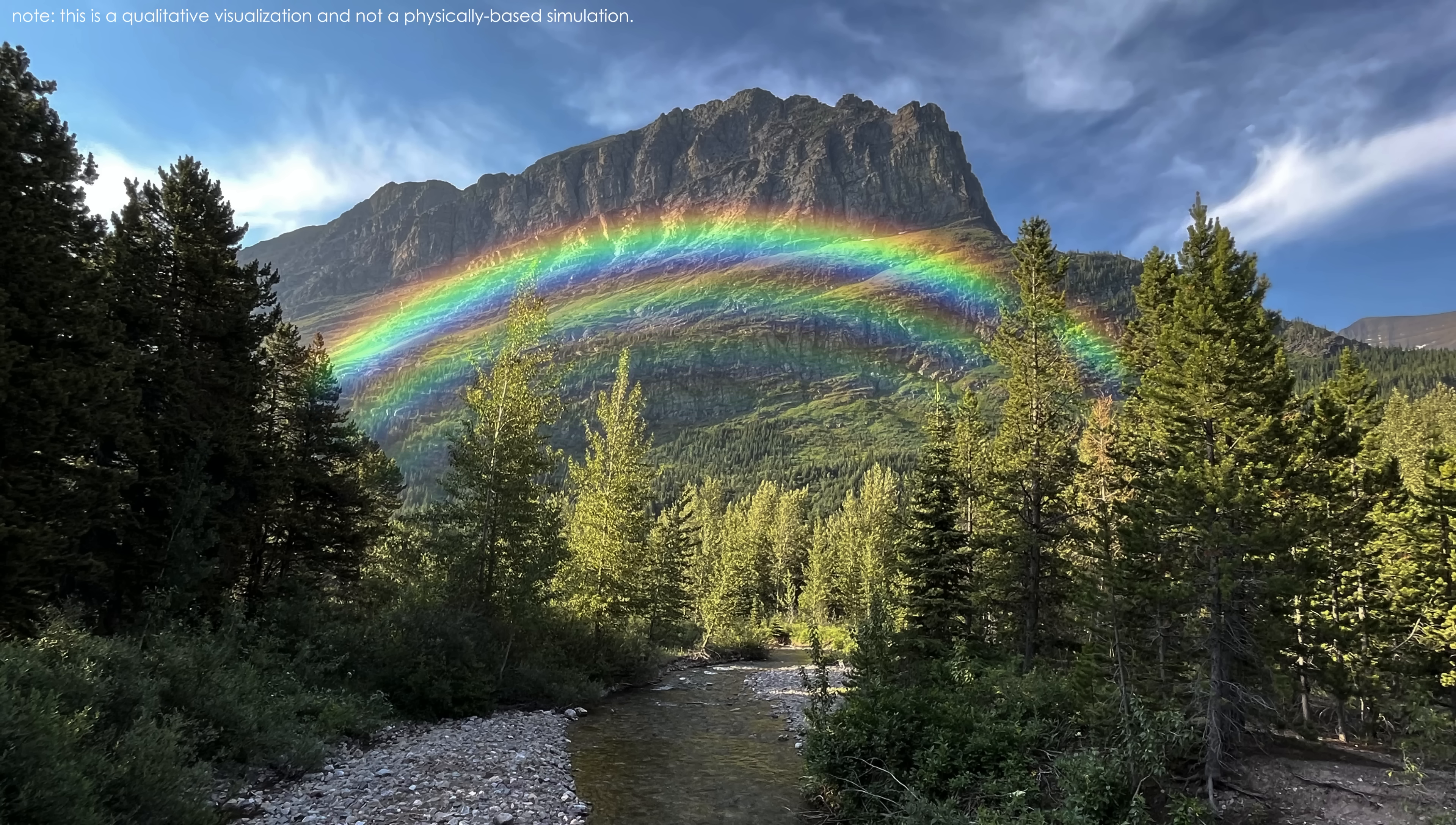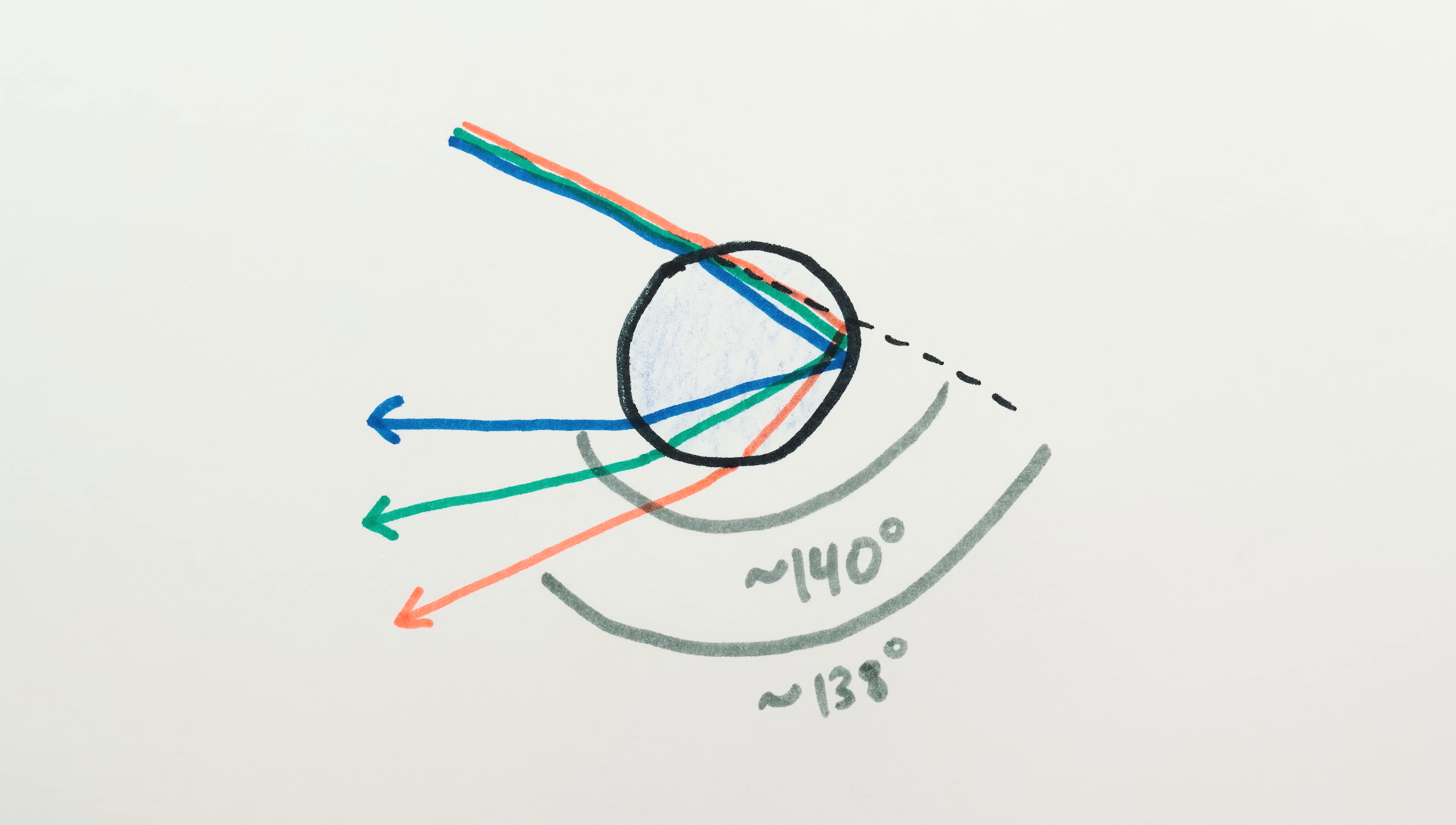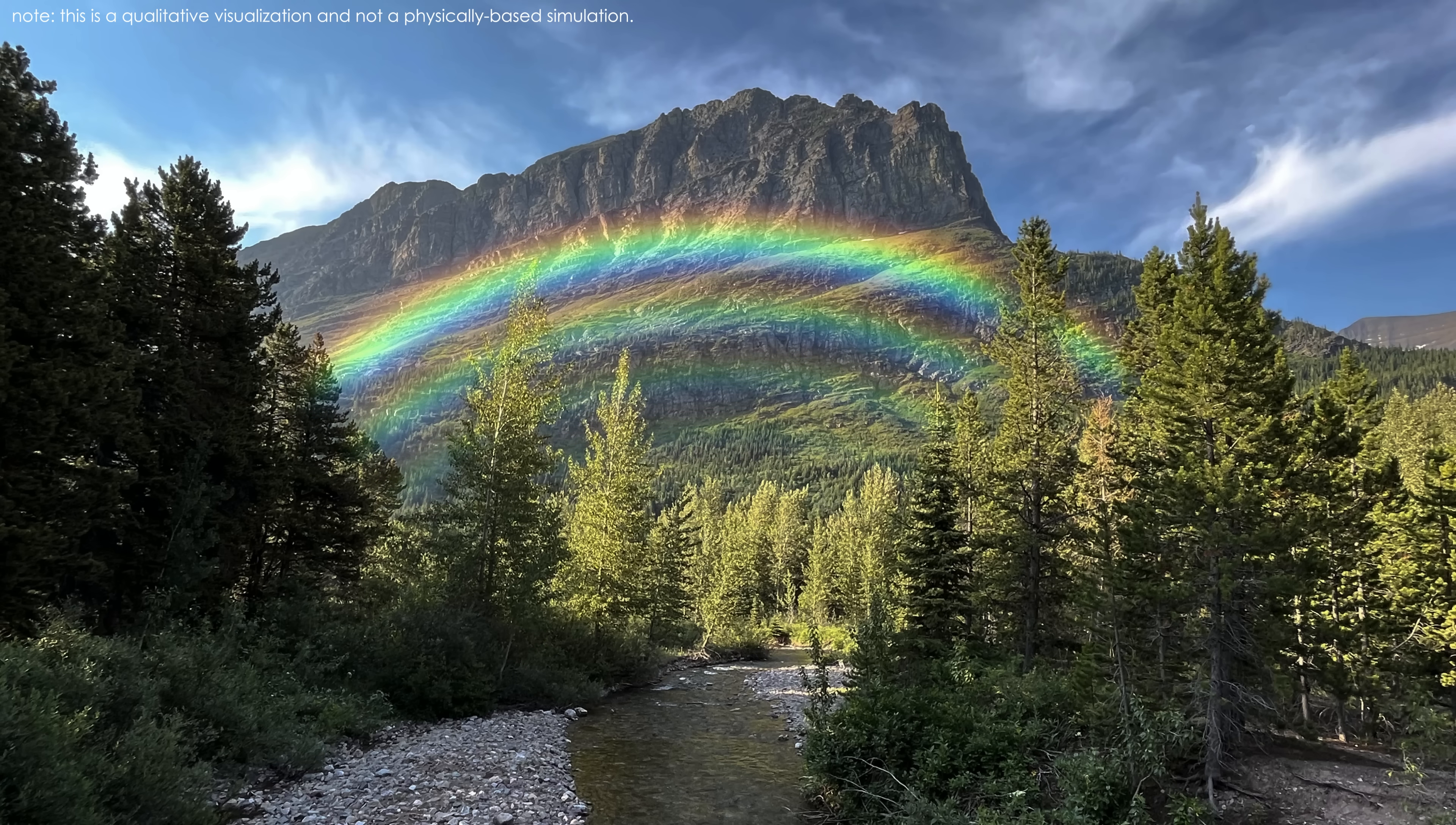With even smaller water droplets, around a 20th of a millimeter, the rainbow and supernumerary bows get even broader and even farther apart, but crucially, different colors of light are still only bent away from each other by the same amount as before, and so the broadening of the rings causes colors to blur into each other, making the rainbow less vivid.